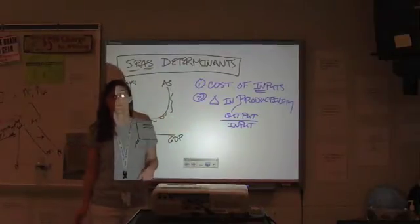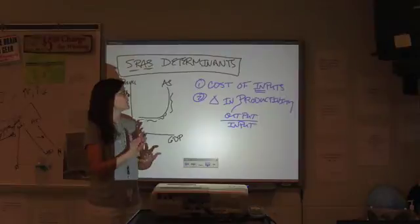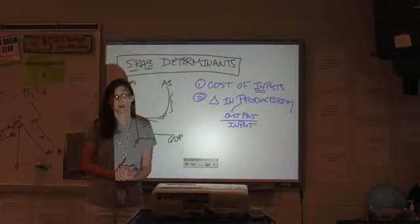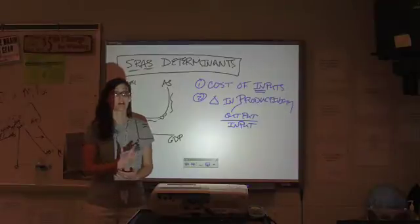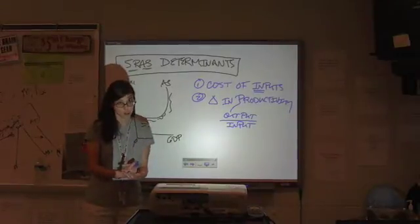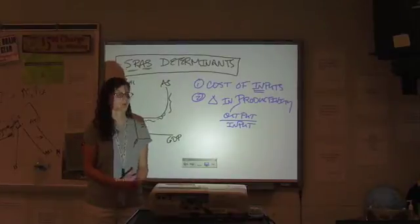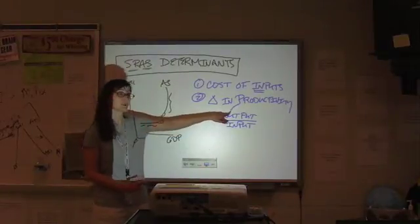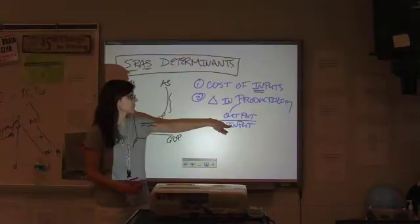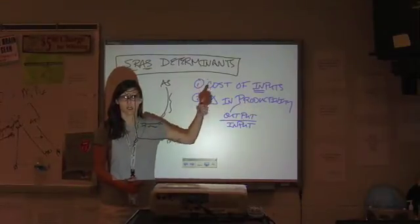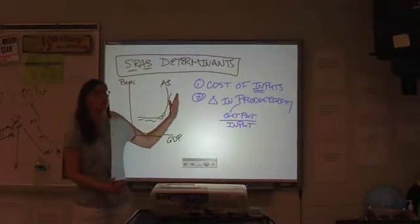Let's say, for example, that we can replace a worker with a robot that lowers your per unit cost of production and can work twice as fast. If you get twice as many outputs from something that's the same price for the input, you double your productivity. That's good. That means that aggregate supply would increase.